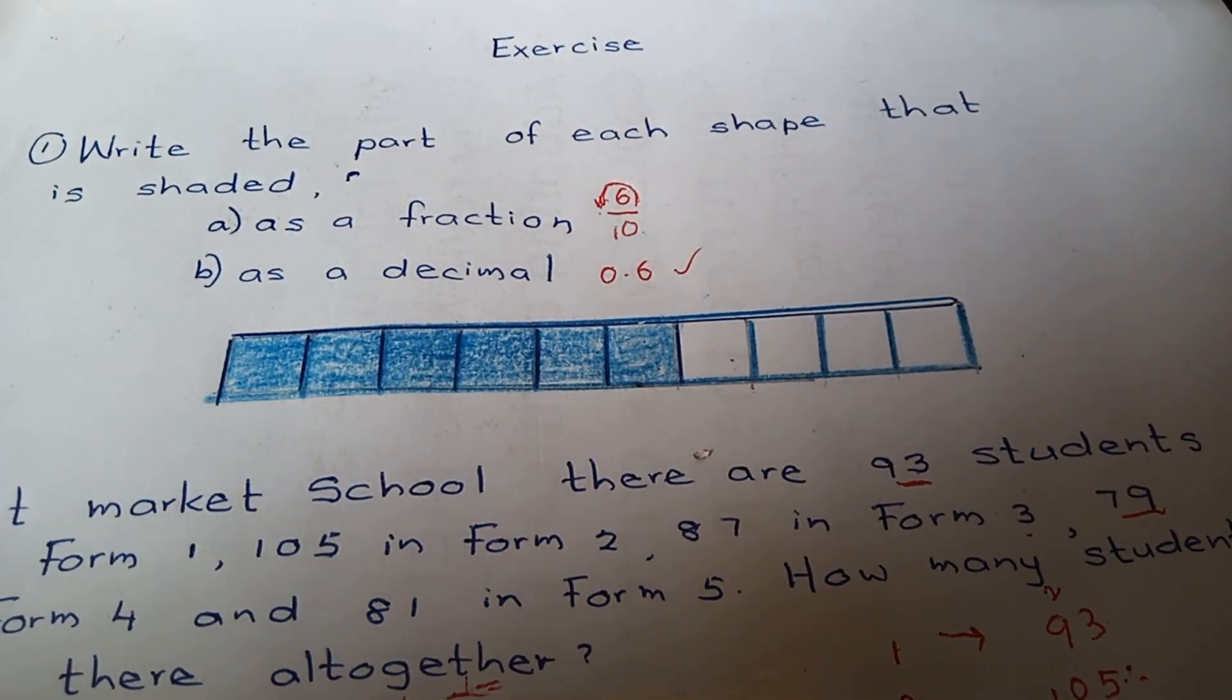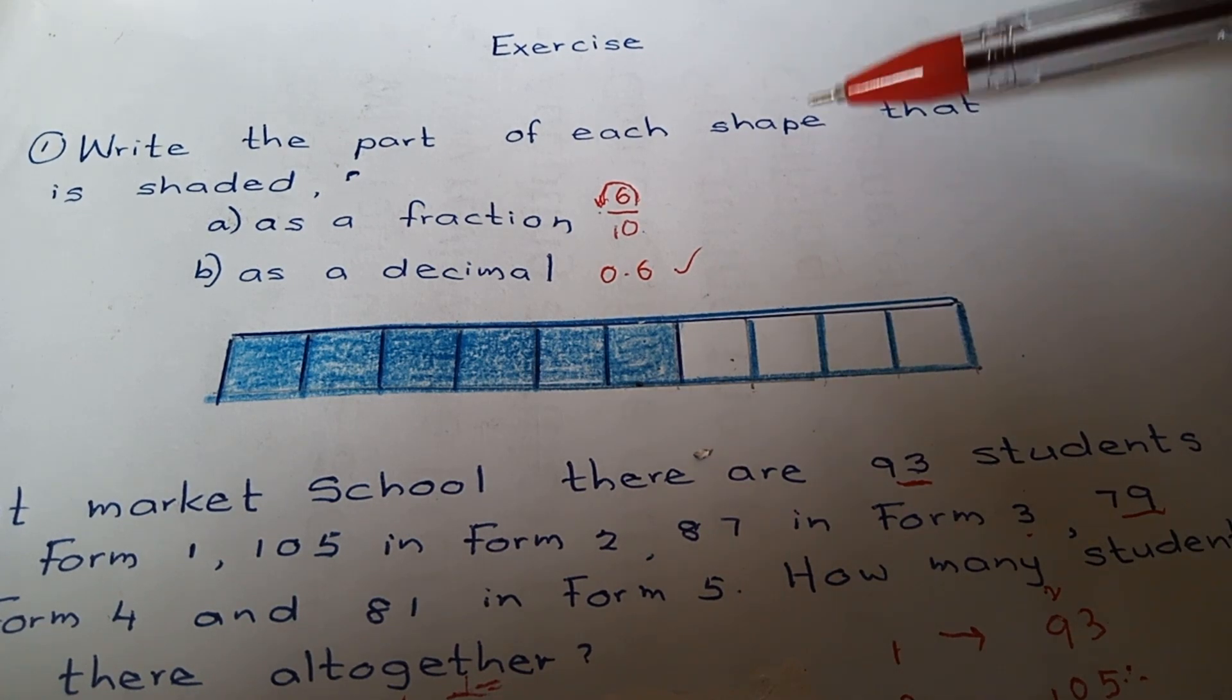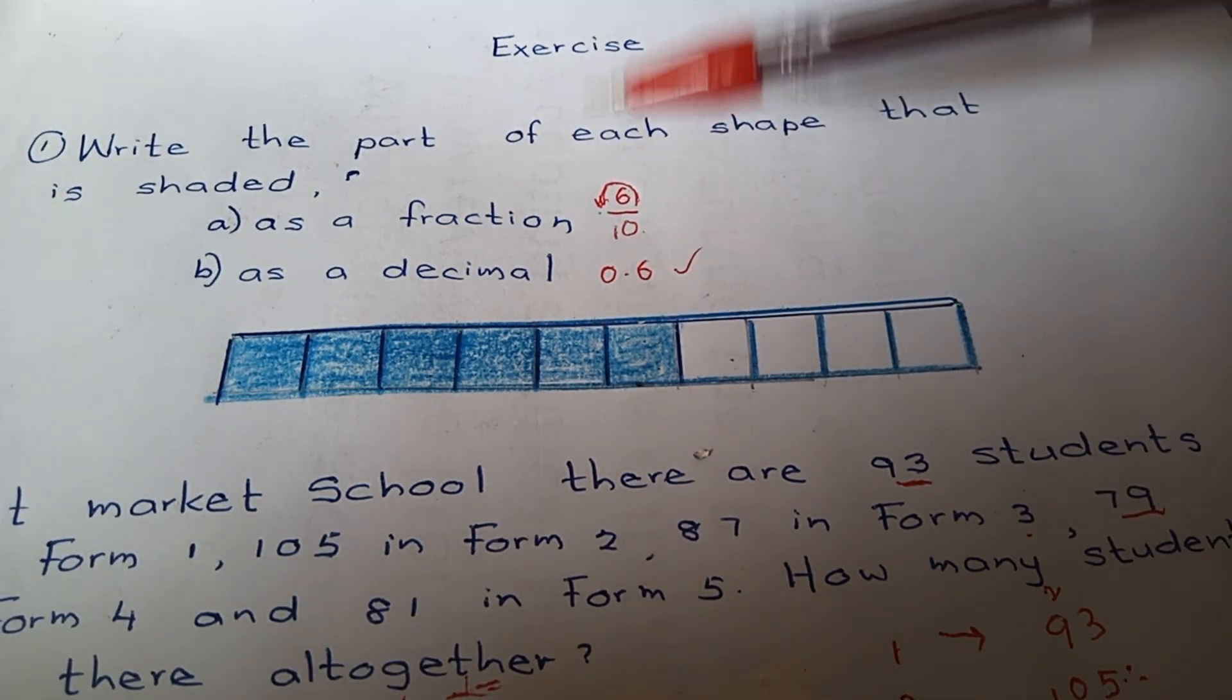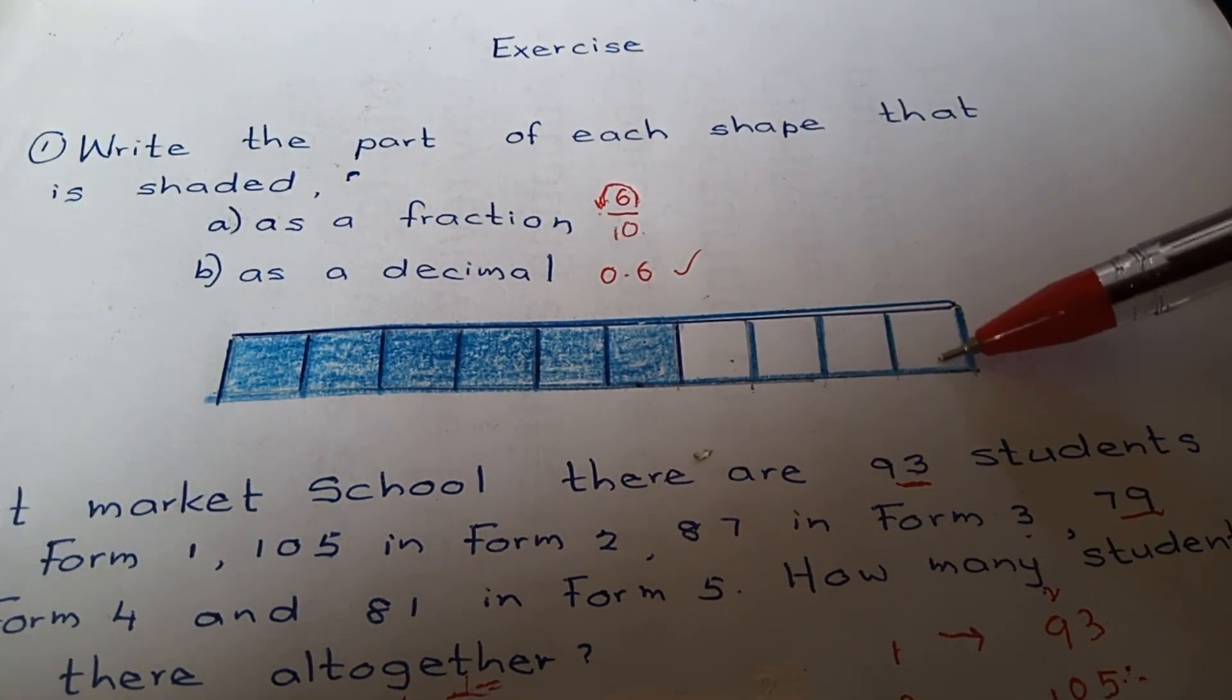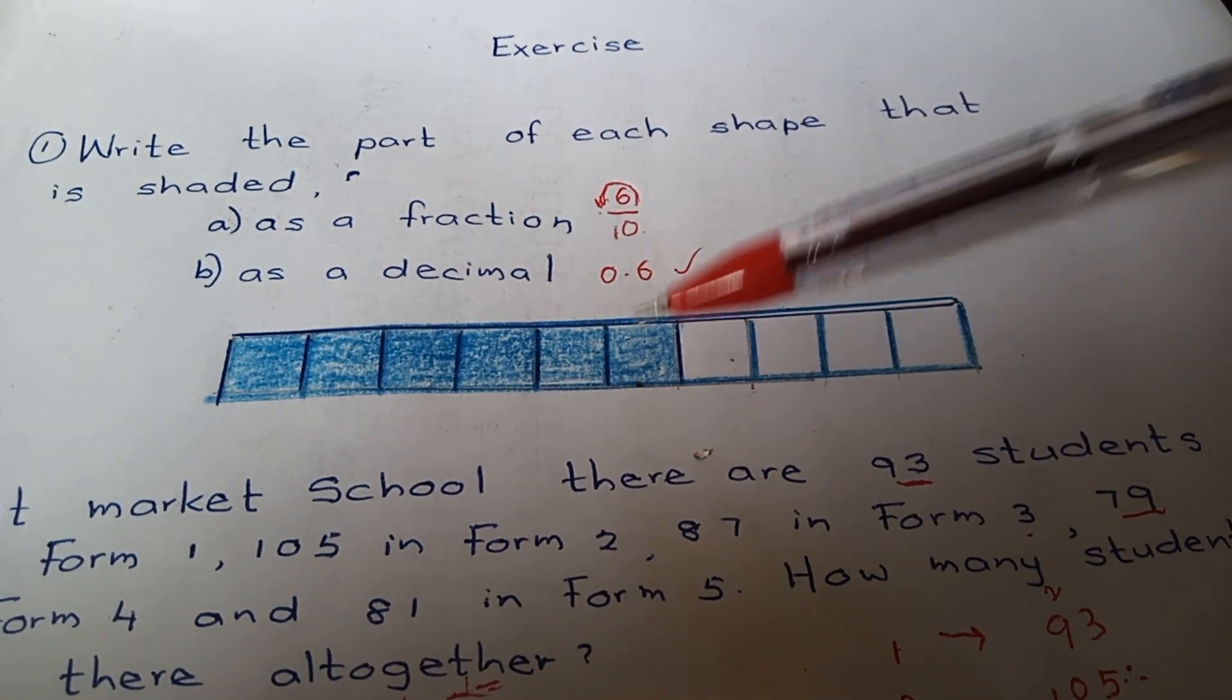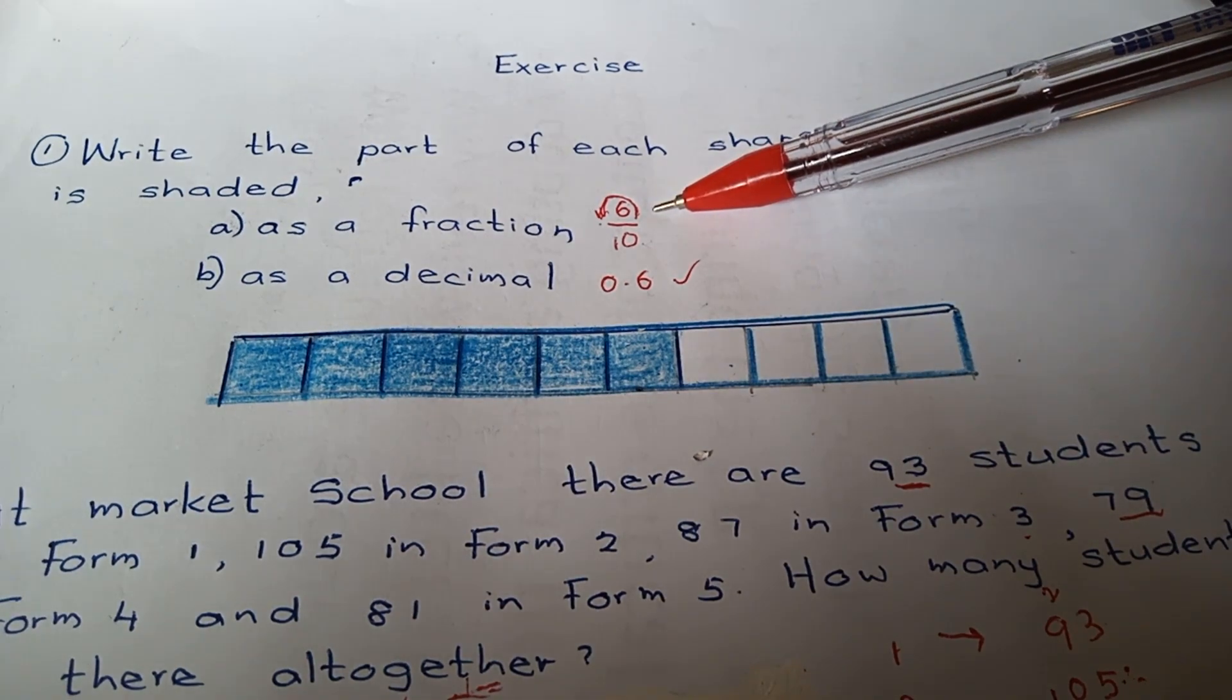Okay, let's do the revision exercise. Question number one: write the part of a shape that is shaded as a fraction and as a decimal. There are one, two, three, four, five, six, seven, eight, nine, ten parts. One, two, three, four, five, six are colored.